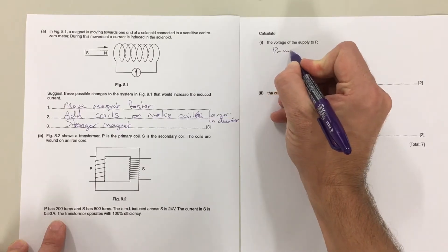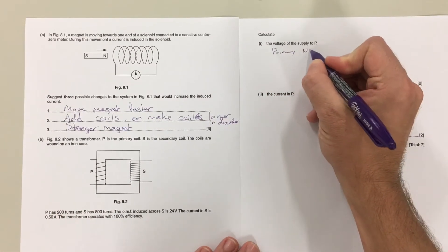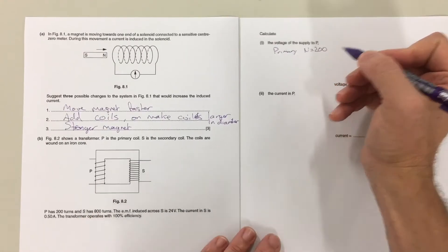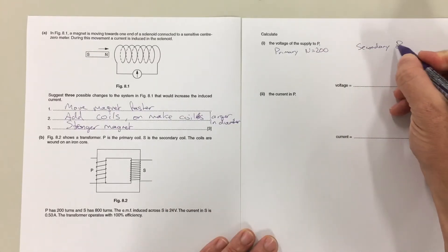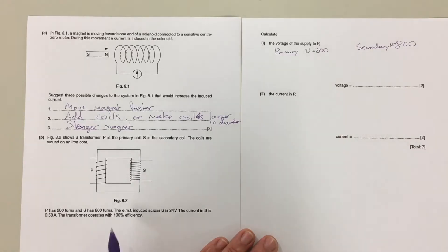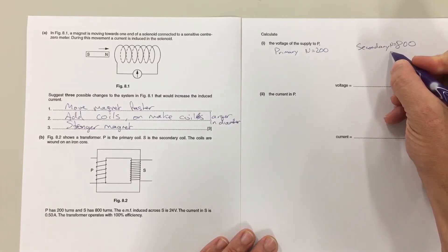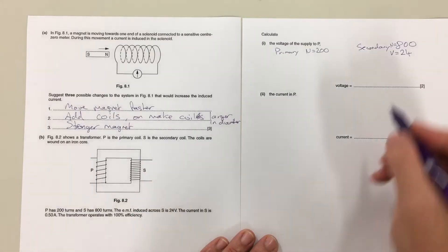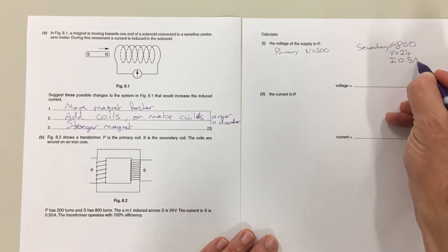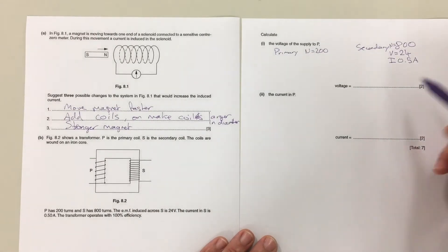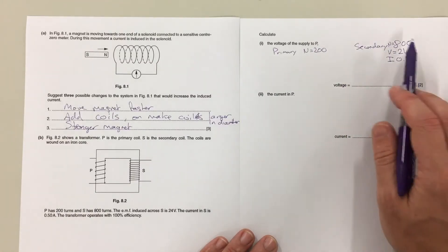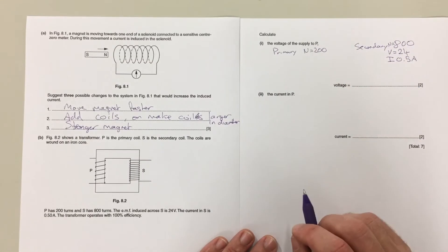So primary we've got 200 turns and let's do the secondary over here. We've got an EMF induced across the secondary is 24 volts. We've got the current in the secondary as 0.5 amps and the transformer operates with 100% efficiency which means no power is lost. So we can use the ratio of the number of turns to dictate the ratio of the voltage. More turns, more voltage.